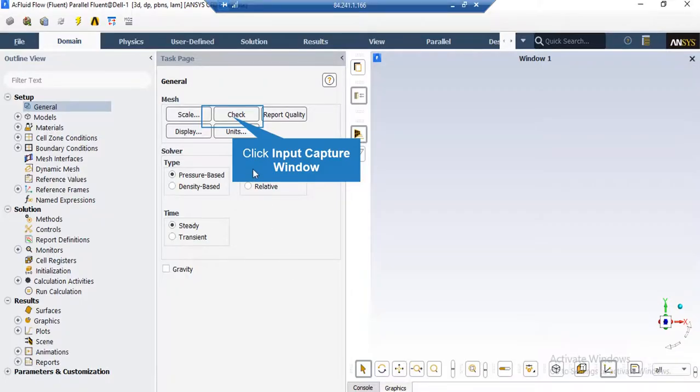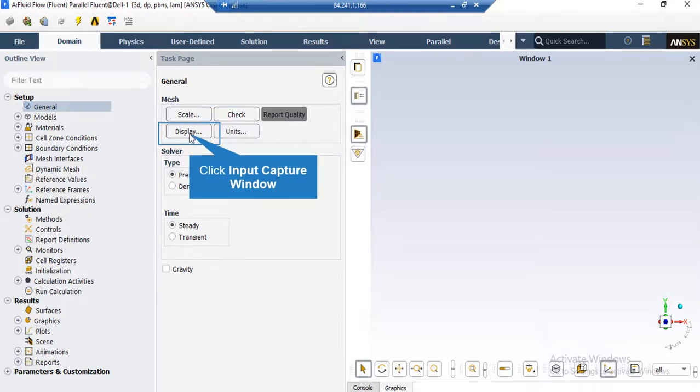By clicking on check button, you will see that under the console tab, the Fluent software will start to check your mesh for any errors. By clicking on display button, a new window will appear which you can see different parts of your geometry.